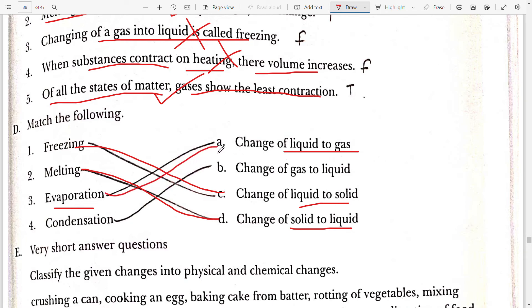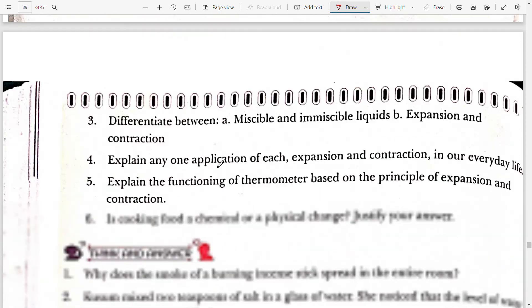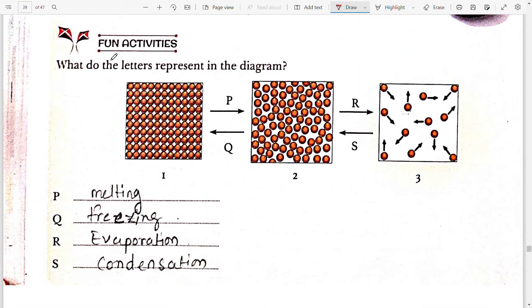Evaporation is the process or the change of liquid to gas, so you can mark third with A. Condensation is the change of gas to liquid. Mark it as change of gas to liquid.